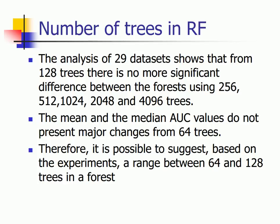How do you choose the number of trees in a random forest? You might think that growing an infinite number of trees gives better prediction. However, a research paper analyzed 29 datasets using different numbers of trees — starting from 64, 128, 256 and so on — and found that the mean and median AUC values do not change significantly after 64 trees. So when growing a random forest, the number of trees, which corresponds to the n_estimators parameter in sklearn, can be chosen between 64 to 128, beyond which there is no significant change in accuracy.